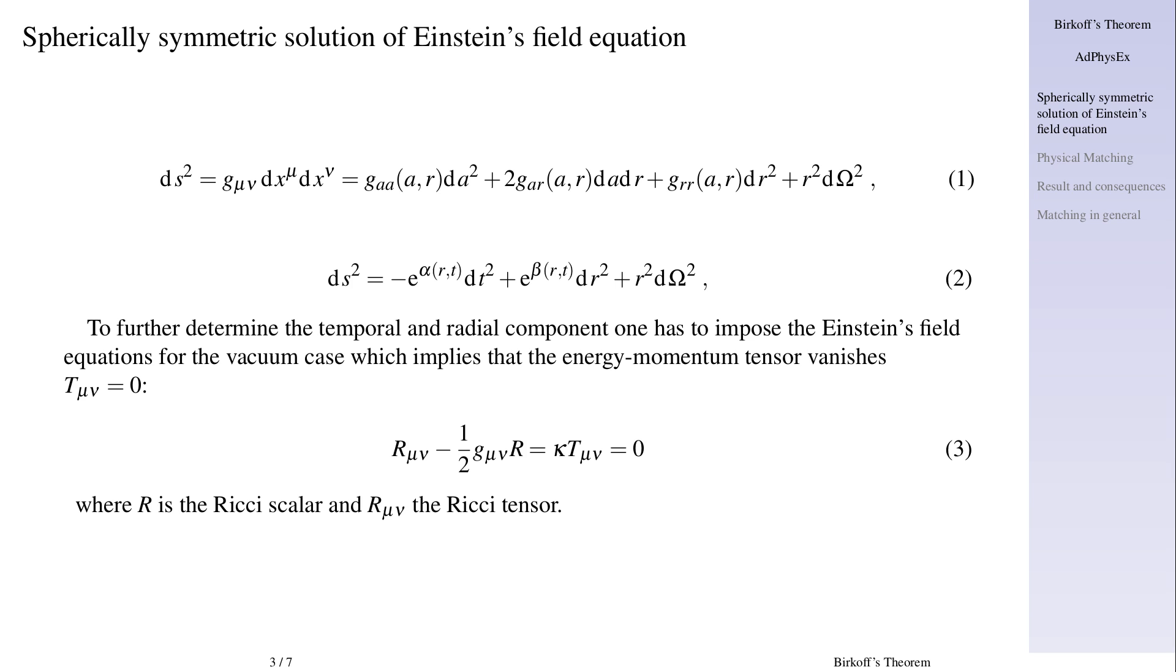To further determine the temporal and radial component one has to impose the Einstein's field equations for the vacuum case which implies that the energy momentum tensor vanishes T mu nu equals zero. R mu nu minus one over two g mu nu R equals kappa T mu nu equals zero.